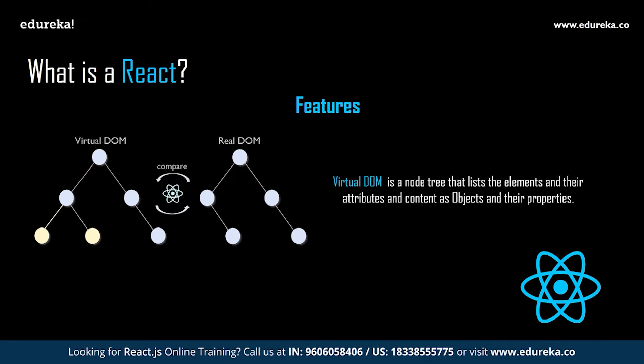Virtual DOM. Like an actual DOM, the virtual DOM is also a node tree that lists elements, attributes, and content as objects and their properties. React's render function creates a node tree out of the React components, then updates this tree in response to mutations in the data model. Virtual DOM works in three steps: whenever any underlying data changes, the entire UI is re-rendered in the virtual DOM representation. Then the difference between the previous DOM and the new one is calculated, and the real DOM is updated only with what has actually changed. This makes the application much faster with no memory wastage.